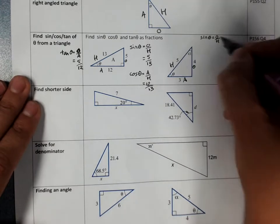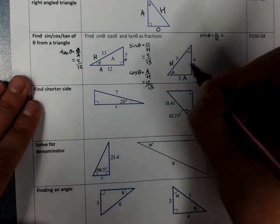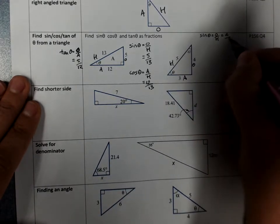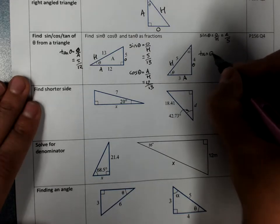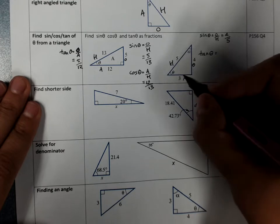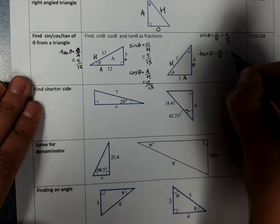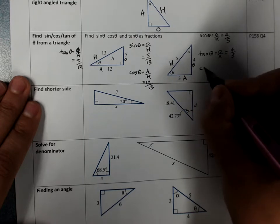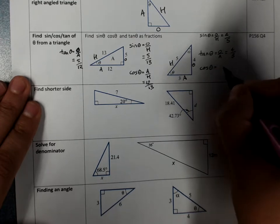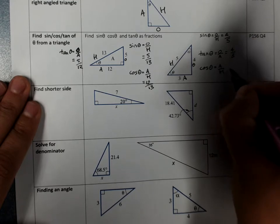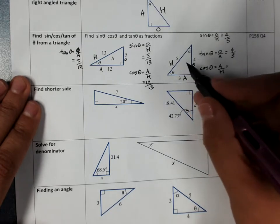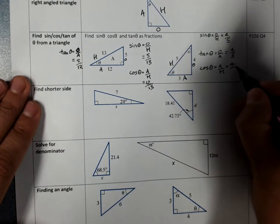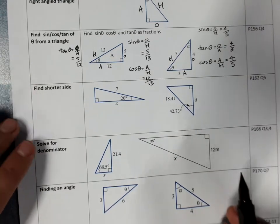If we are running out of space, we could work across the page here. Tan is opposite over adjacent. So we write our ratio, and then we can substitute in the values. Adjacent over hypotenuse, 4 over 5.